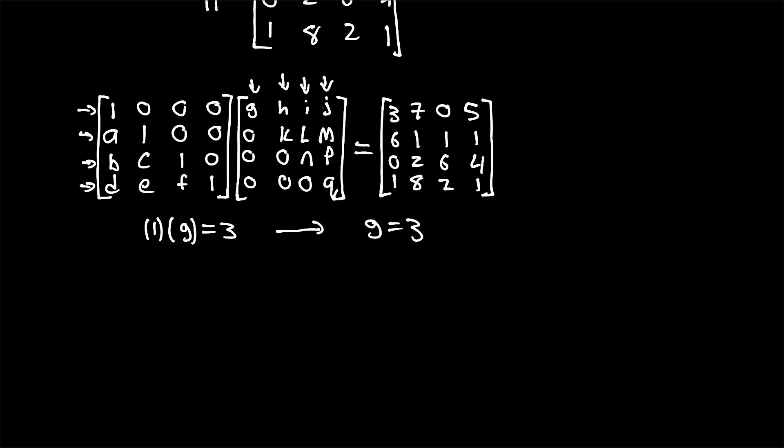We can similarly state that H equals 7 from our output, I equals 0 from our output, and J equals 5 from our output.